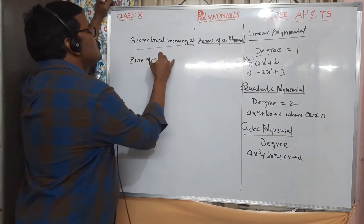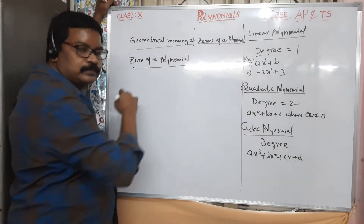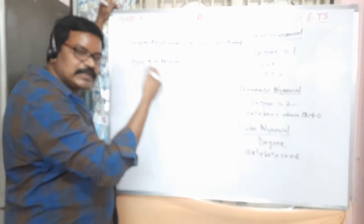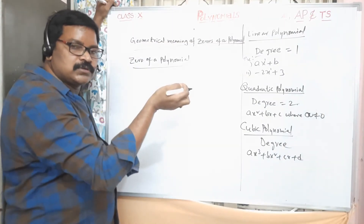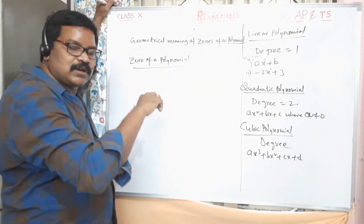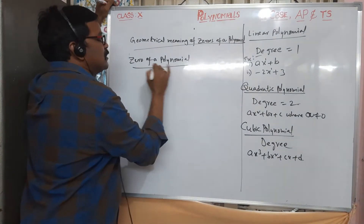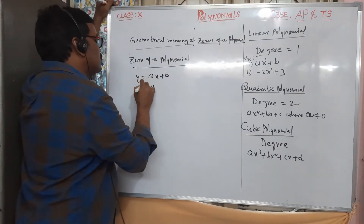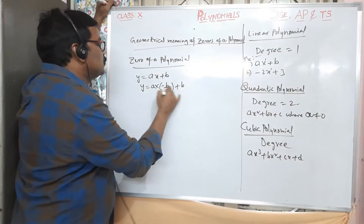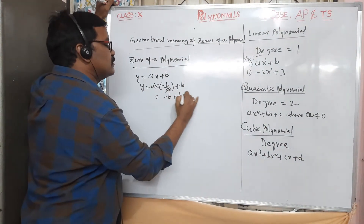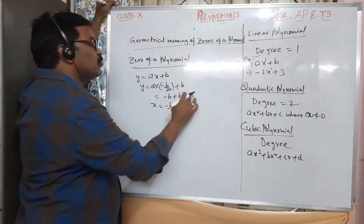The zero of a polynomial is the value of x for which the polynomial becomes zero. For example, for y = ax + b, substituting x = −b/a gives a(−b/a) + b = −b + b = 0. Therefore, x = −b/a is called the zero of the polynomial.